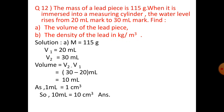Mass is given as 115 grams, V1 is 20 milliliter, and V2 is 30 milliliter. The volume will be V2 minus V1, that is 30 minus 20 milliliter, which equals 10 milliliter. We know that 1 milliliter equals 1 cubic centimeter, so 10 milliliter equals 10 cubic centimeter.